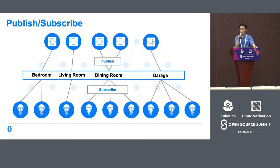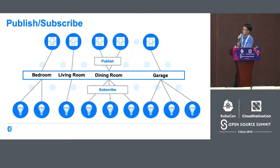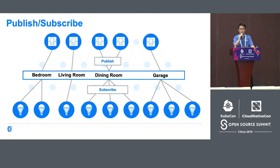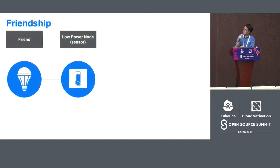We also have publish and subscribe for Bluetooth Mesh, which is very flexible. In the network, we have different group addresses. Servers can subscribe to different group addresses, and clients can publish to group address information. Through publish and subscribe, servers and clients can flexibly combine, and on the application layer, we can flexibly adjust publishers and subscribers to make the whole application more flexible.